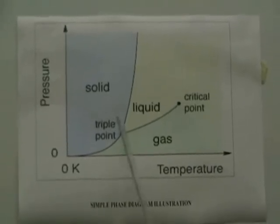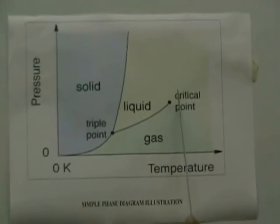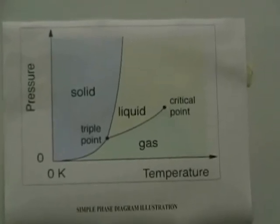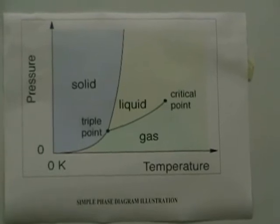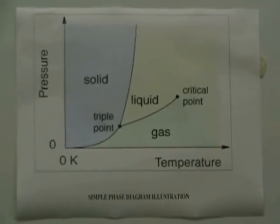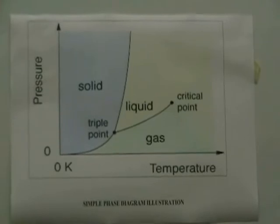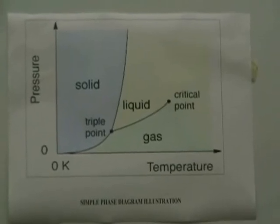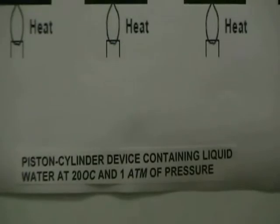Moving on, in the diagram we have the critical point. The critical point specifies the conditions of temperature and pressure, and sometimes composition, at which a phase boundary ceases to exist. The critical point is the point at which saturated liquid and saturated vapor states are identical.